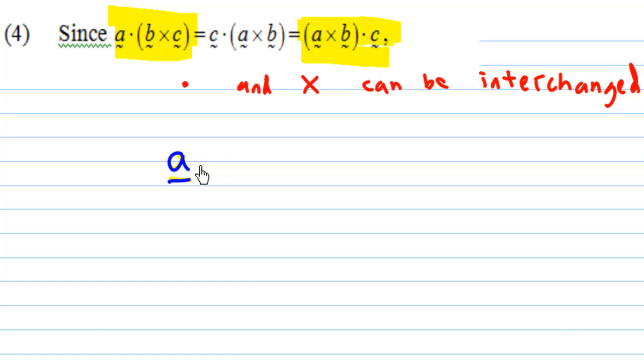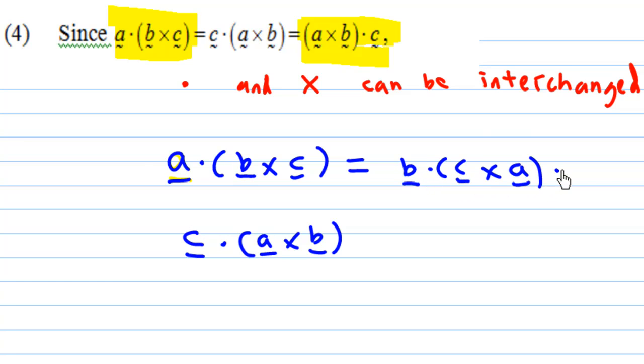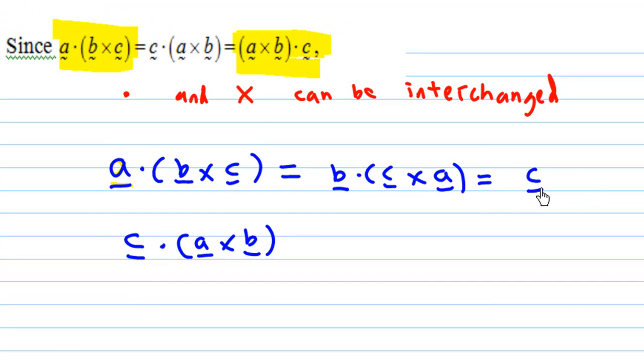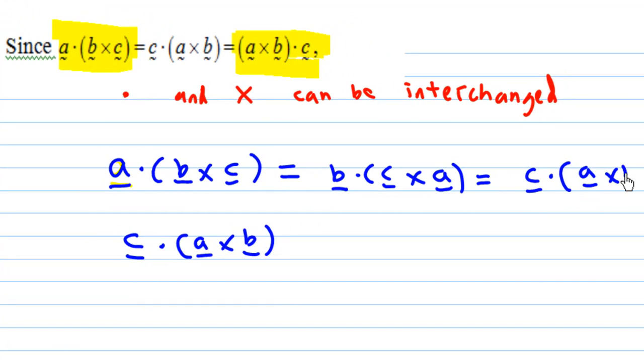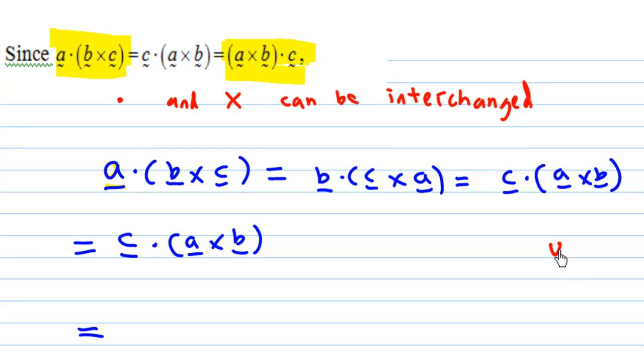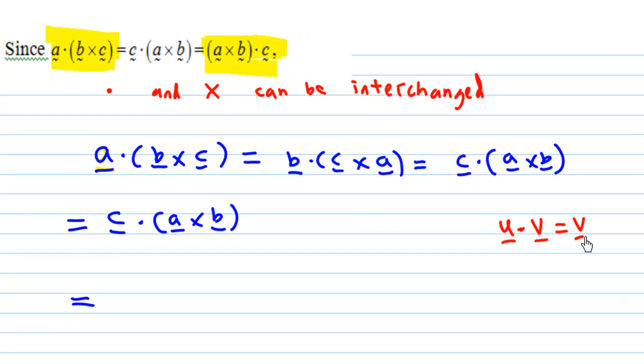But notice the location of the bracket has changed. This is because A dot B cross C, we know that if you do it slowly, A dot B cross C by cyclic chain is B dot C cross A, and C go in front, B join the end of the queue, C dot A cross B. U dot V and V dot U the same, so you can interchange these two. C dot A cross B is A cross B dot C.